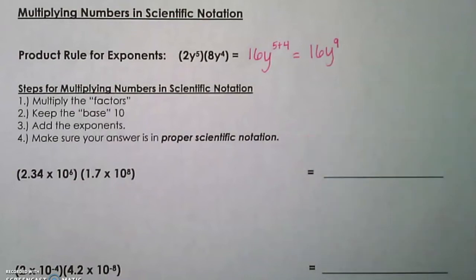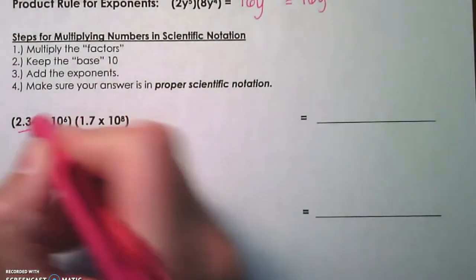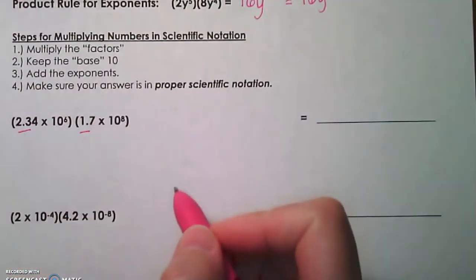So let's look at the first one: 2.34 times 10 to the sixth times 1.7 times 10 to the eighth. You're going to take those factors, 2.34 and 1.7, and multiply those numbers.